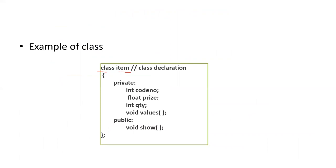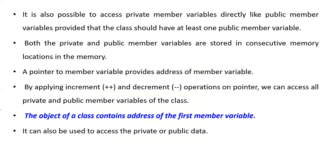The class name is 'item'. It has two sections: private and public. In private you can see data members and a member function, and in public you can see the member function 'show'. The class is terminated with a curly brace and semicolon. It is also possible to access a private member variable indirectly, provided the class has at least one public member variable. Both private and public member variables are stored in consecutive memory locations. By applying increment and decrement operators on a pointer, we can access both private and public member variables.